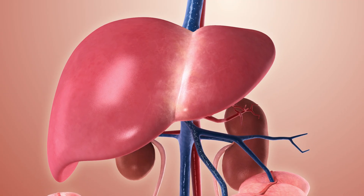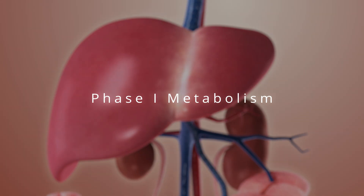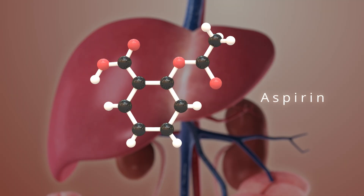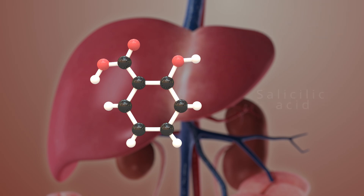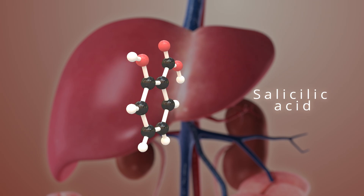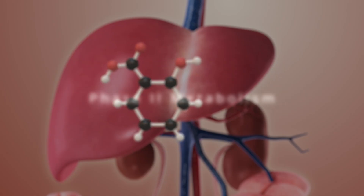The liver's job is a bit like a filter. It will metabolize drugs before they reach the rest of the body, and it does this in a few steps. Phase 1 metabolism: first, aspirin is hydrolyzed, breaking off ethanoic acid and leaving behind salicylic acid. This salicylic acid isn't water-soluble, so it can't be excreted in urine yet.